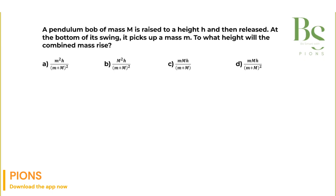A pendulum bob of mass M is raised to a height h and then released. At the bottom of its swing, it picks up a mass small m. To what height will the combined mass rise?